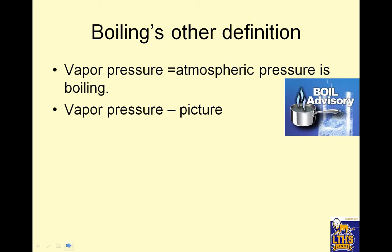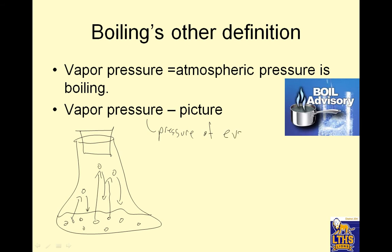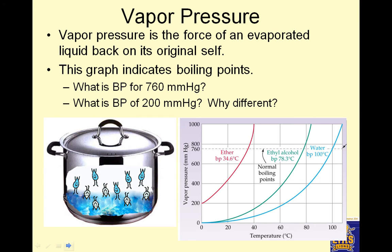Boiling's other definition: vapor pressure equals atmospheric pressure is boiling — you need to have that memorized. Vapor pressure: here's a little flask with a cork in it. Some water particles — or let's call it gasoline — some gasoline particles evaporate, and as they evaporate they exert a pressure back down on that liquid. That is vapor pressure. Vapor pressure is the pressure of evaporated particles back on the original liquid.